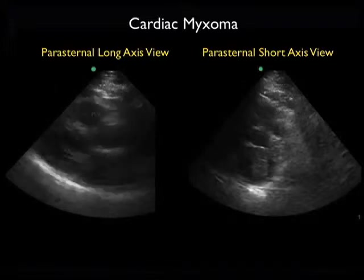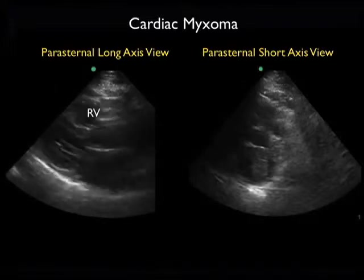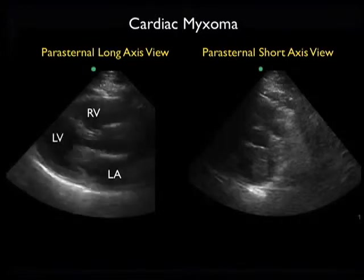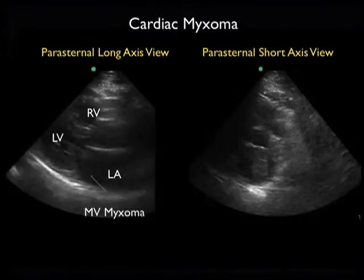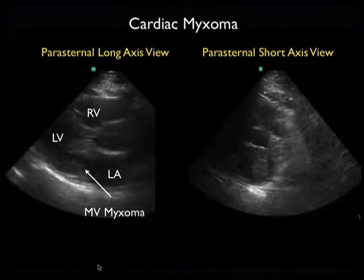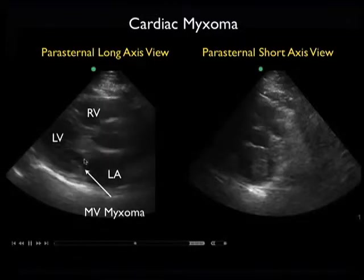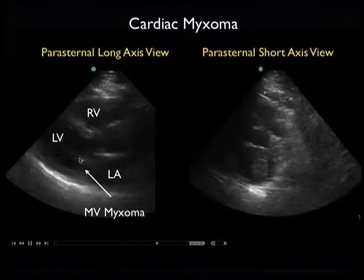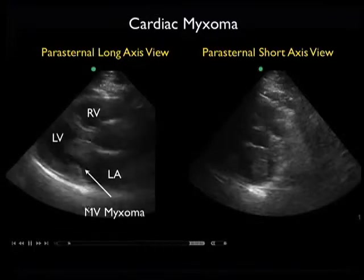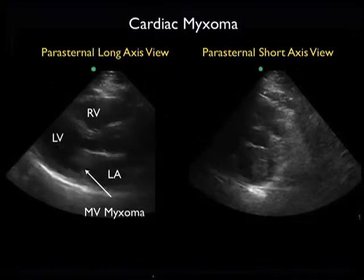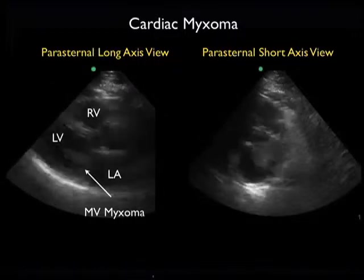This is Dr. Phil Pereira, and in this video clip, we'll take a look at the classic appearance of a cardiac myxoma on bedside emergency ultrasound. First, we'll look at the parasternal long axis view to the left, and with a small indicator arrow, I'm showing the fleshy mitral valve myxoma present on the anterior leaflet of the mitral valve. We see the left atrium to the bottom right, the left ventricle to the bottom left, and the right ventricle seen to the top of the image.